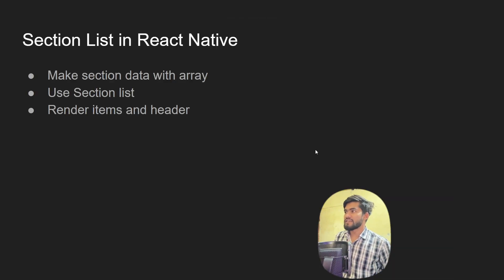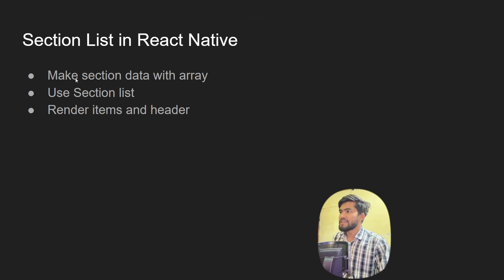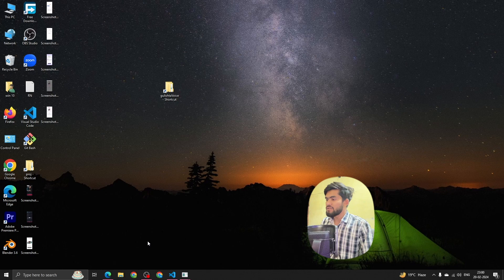What we're going to cover: we'll make section data with an array, use the SectionList component, and then render items and a header for each section.